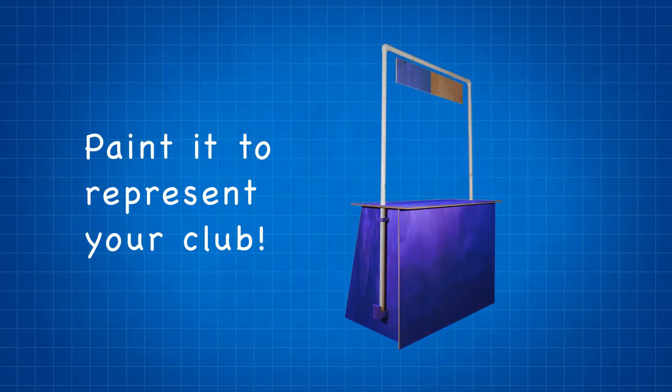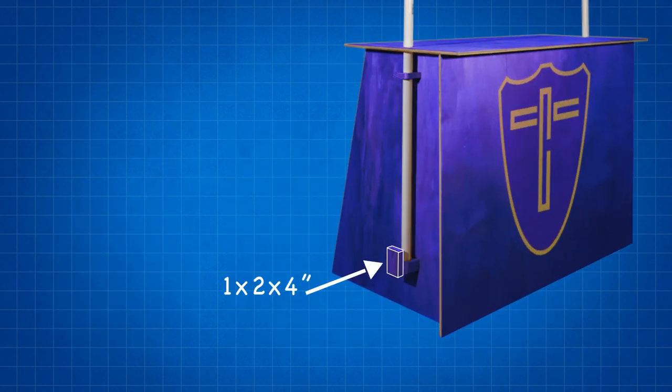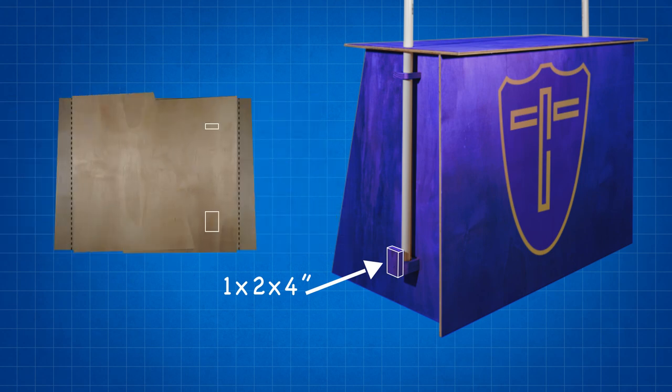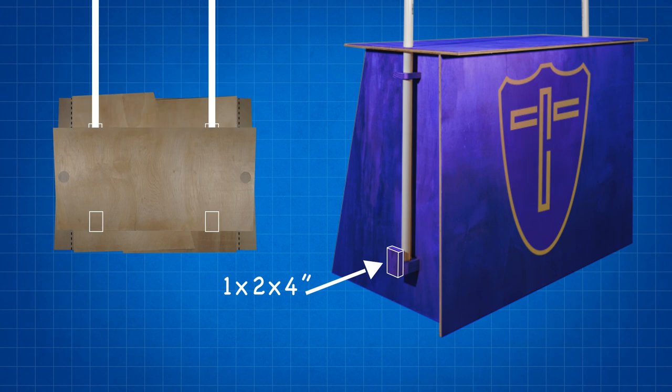Your club can choose to paint the stand if you'd like. You can also choose to add an extra piece of wood to the bottom holsters to hold the tabletop and sign when the whole stand is folded up. To do that, glue a one by two piece of wood that is about four inches long to each bottom holster to make an L shape.